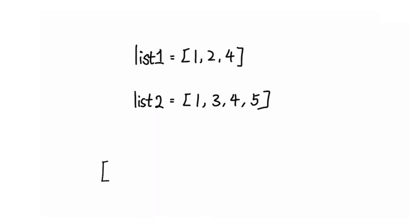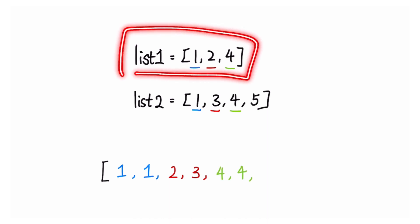The general approach is to iterate through both linked lists simultaneously, comparing the values of the current nodes from both lists and appending the smaller one to the new linked list. If one linked list is fully traversed before the other one, we just append the rest of the other linked list to the new linked list.